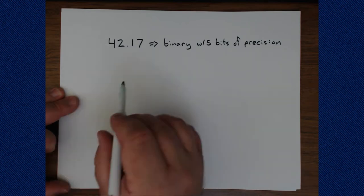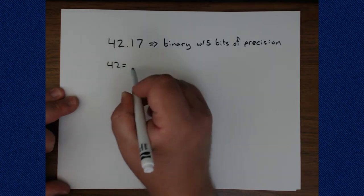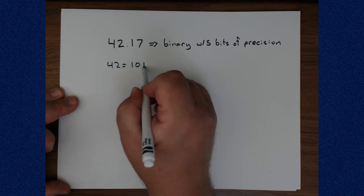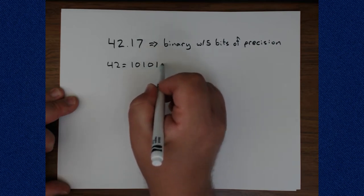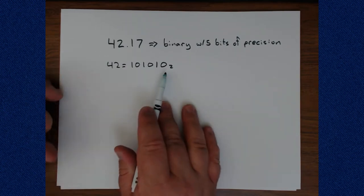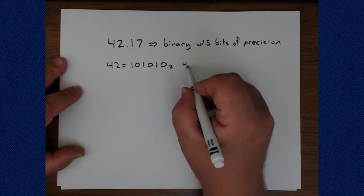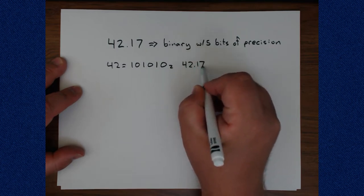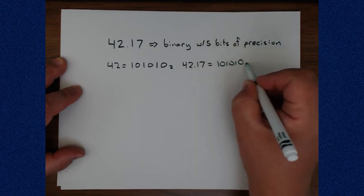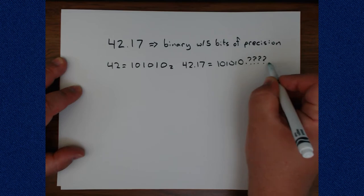One can take 42 and immediately go, well, 42 is 16 plus 8 is 40, plus 2, no 0. So 42 is this in binary. And 42.17 must be 1, 0, 1, 0, 1, 0, 1, 0 point, and then five mystery bits down here.